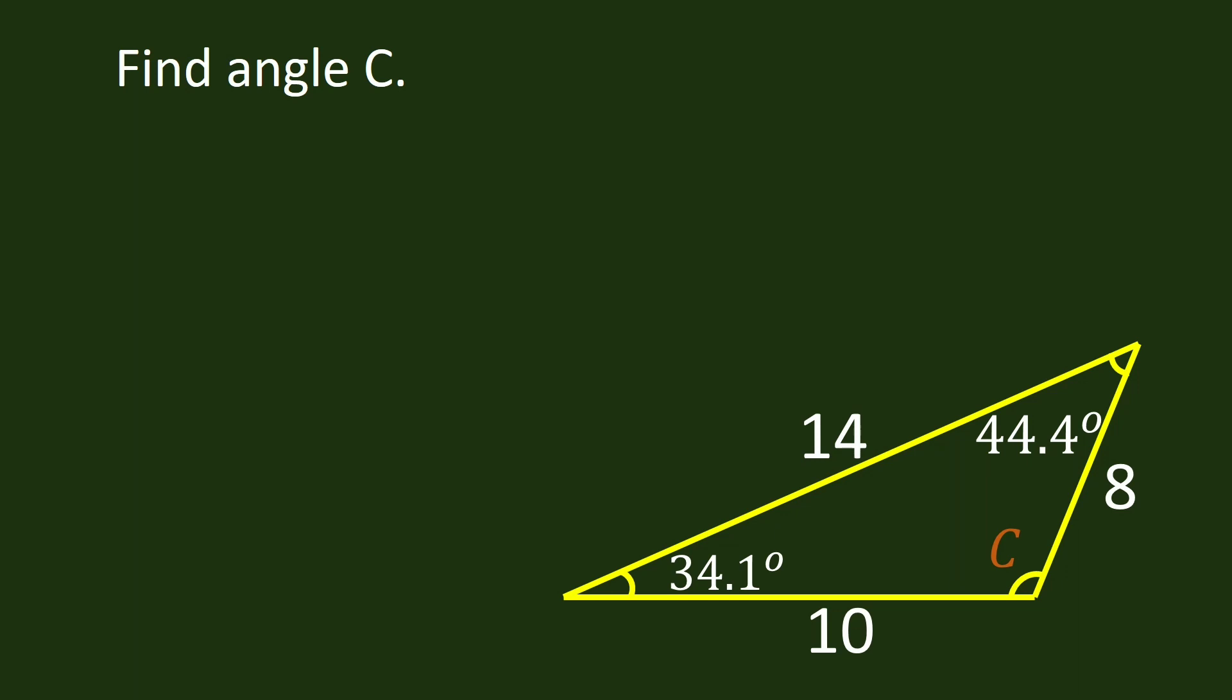Let us now find angle C. To find angle C, we have the option to use law of cosines or to use the angle sum theorem for triangles. So we have 44.4 degrees plus 34.1 degrees plus C is equal to 180 degrees.